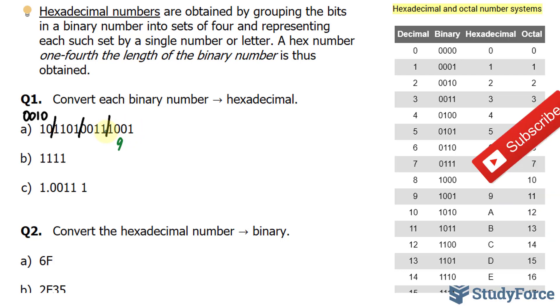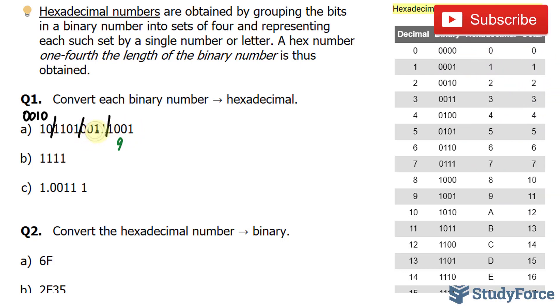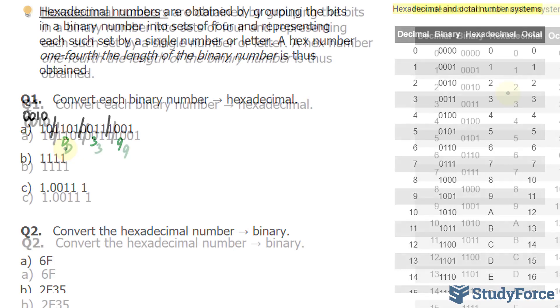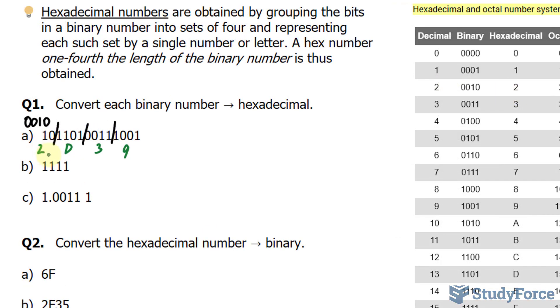8 plus 1 is 9. The next number is 0011, which is 3. 1100 is D, and 0010 is 2. So the hexadecimal for this binary number is 2D39.